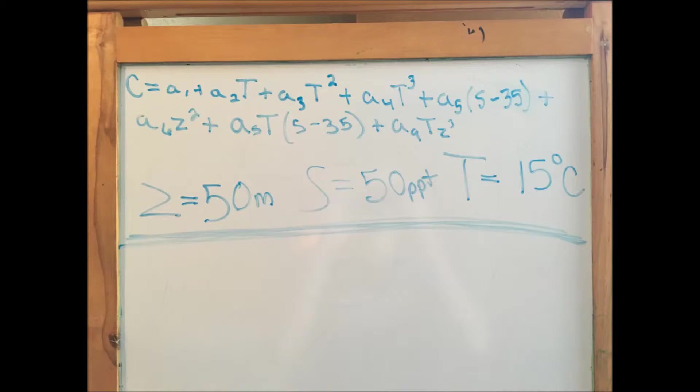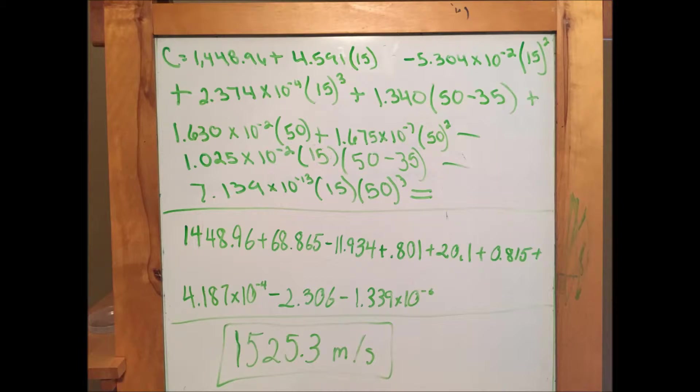Here's an example of an equation being used to find the speed of sounds in water in an ocean that is 15 degrees Celsius, has a salinity of 50 parts per thousand, and is measured at a depth of 50 meters. After plugging in all nine of the A values and substituting in the temperature, salinity, and depth of the ocean, the equation on top is created. Below the line, you can see the equation in its simplified form, and after performing all the necessary calculations, the speed of water in this scenario is determined to be 1525.3 meters per second.